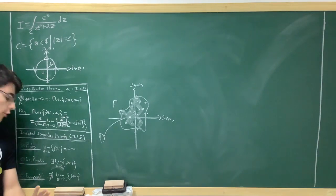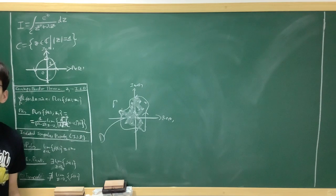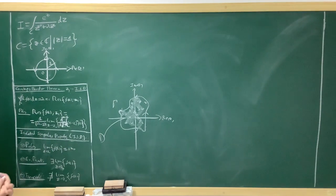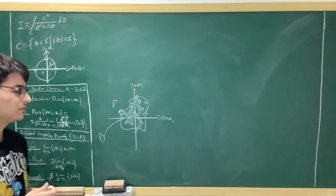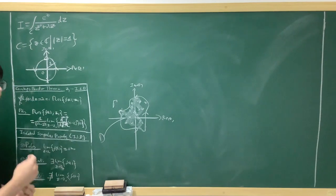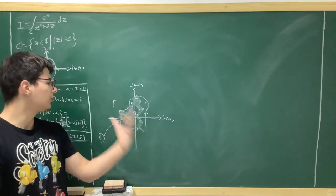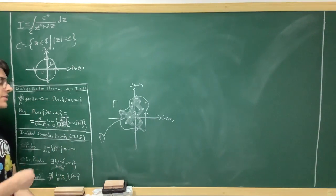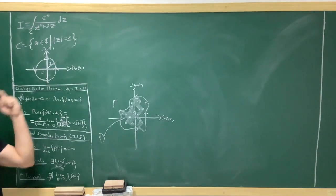A removable singular point is one at which the limit actually exists, so it doesn't create too much of an issue. An essential singular point is one at which the limit doesn't exist. As I said, we're usually not going to be dealing with these two kinds. If you want to know more, I will be making a complex analysis course explaining everything in more detail — proofs, theorems, and everything. For now, let's just use the results and solve the problem.